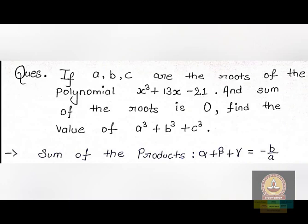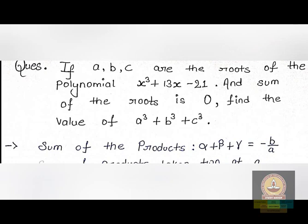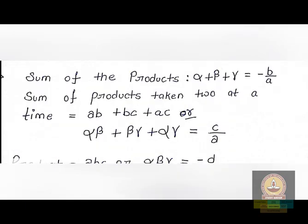Today we are going to solve the Week 4 graded assignment question for Term 1. The question is: if a, b, and c are the roots of the polynomial x³ + 13x − 21, and the sum of the roots is 0, then find the value of a³ + b³ + c³.